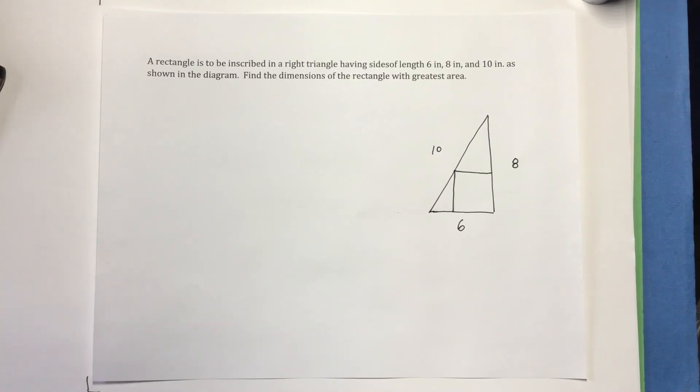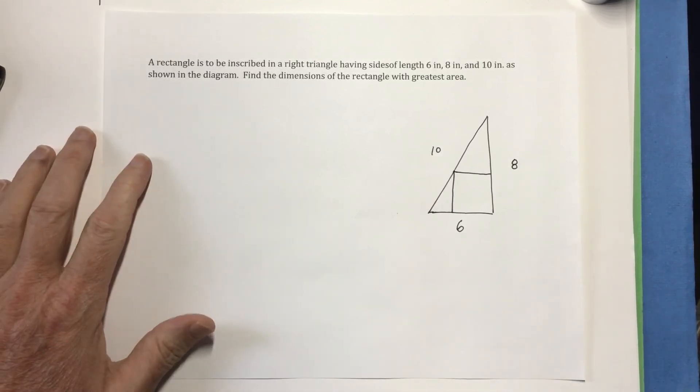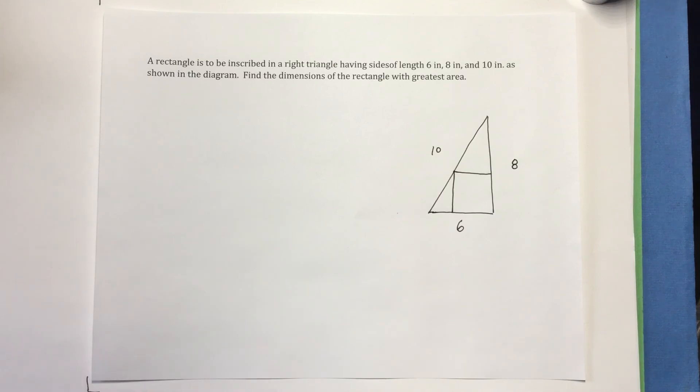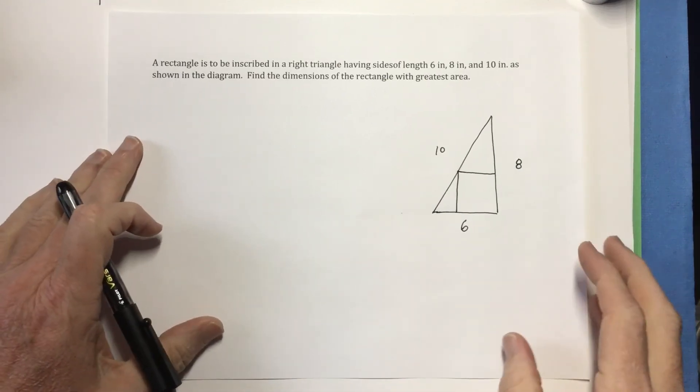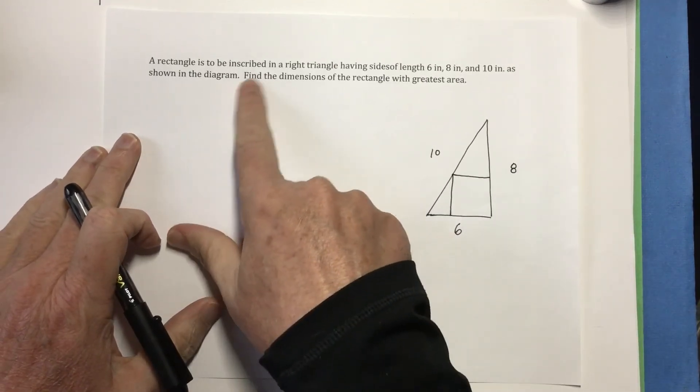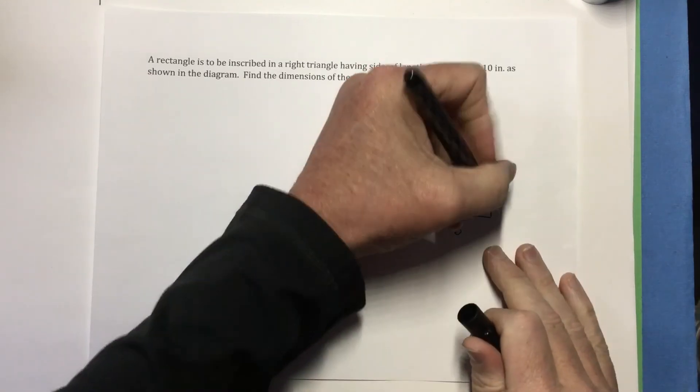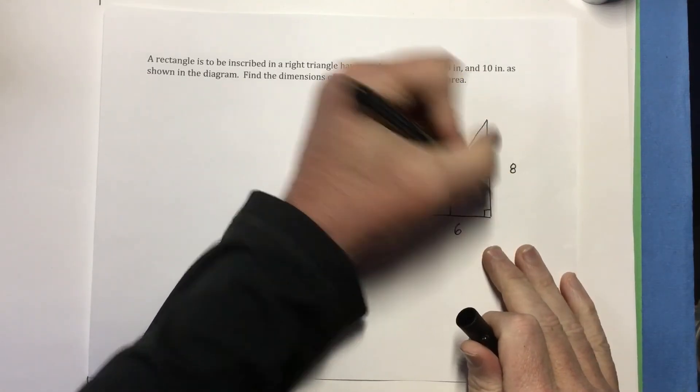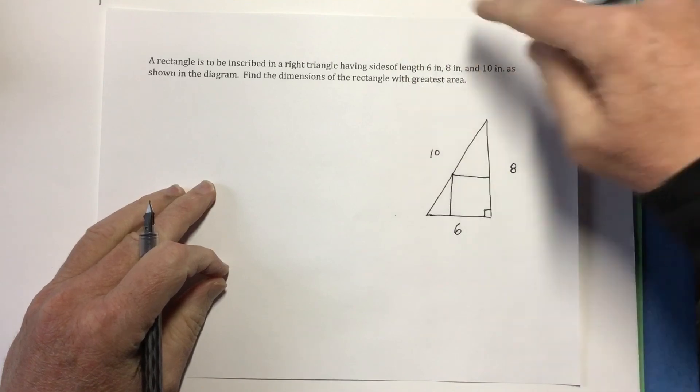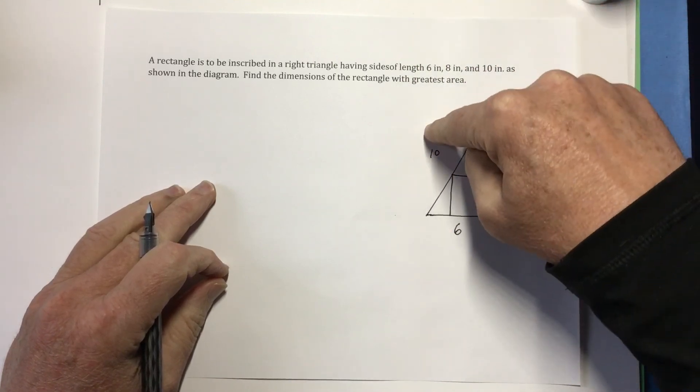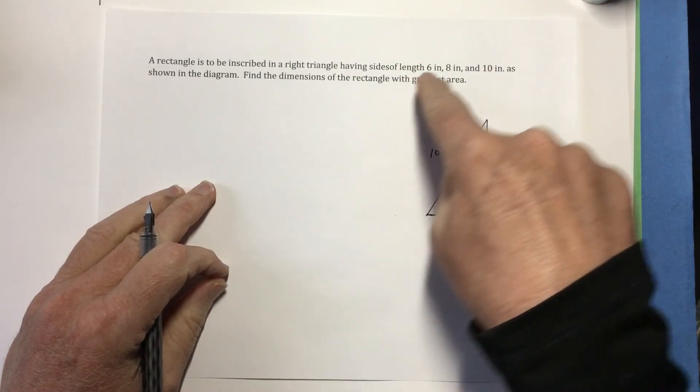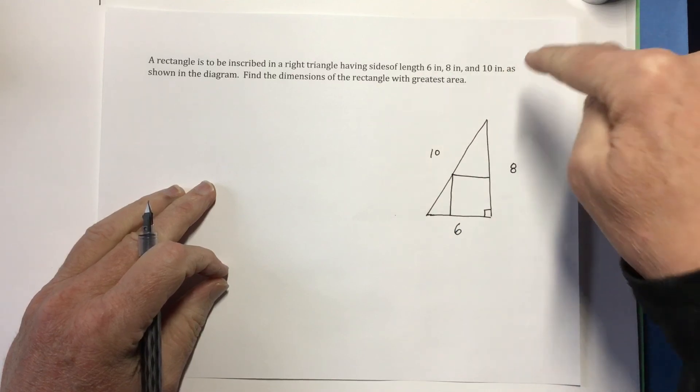Okay, we have a couple calculus problems here that proved to be kind of tricky, so I decided just to make a video about them. So first one here is a rectangle is to be inscribed in a right triangle having sides of length 6, 8, and 10, as shown in the diagram. Find the dimensions of the rectangle with the greatest area.